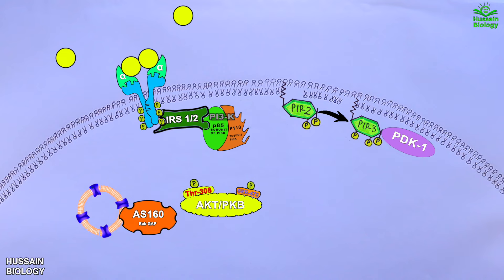So when AS160 is inhibited, the GLUT4 vesicle is easily translocated to the plasma membrane for fusion, and we get the GLUT4 channels in the plasma membrane as shown in the diagram. These channels will then uptake the glucose molecules from blood, thereby decreasing the blood glucose levels.